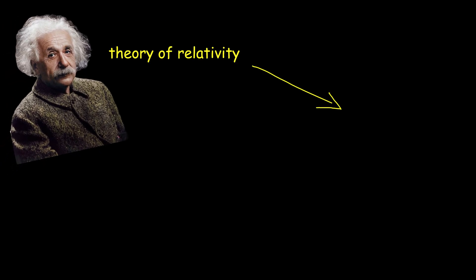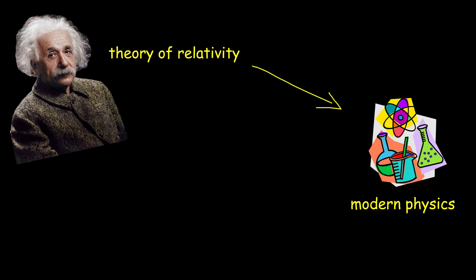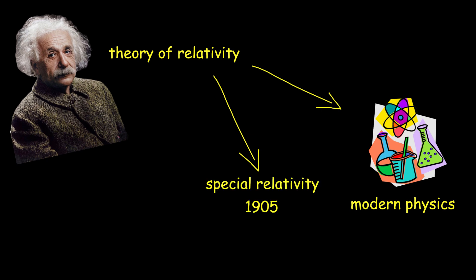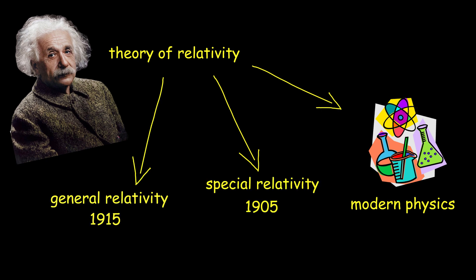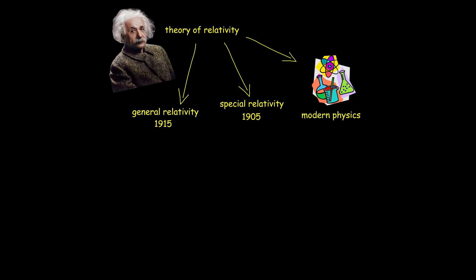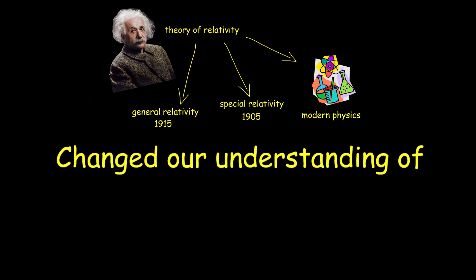Albert Einstein's theory of relativity is one of the cornerstones of modern physics. It consists of two parts: special relativity, introduced in 1905, and general relativity, introduced in 1915. These theories have fundamentally changed our understanding of space, time, and gravity.